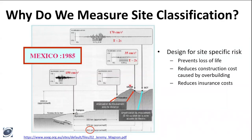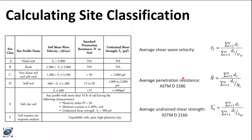We measure site class so we can design for specific risk. Designing for specific risk allows us to make sure buildings are designed strong enough to prevent loss of life, but it also helps us prevent over-designing, which reduces construction costs and insurance costs as well. So what is site class specifically? It's a series of averages or parameters over the top 30 meters or 100 feet.